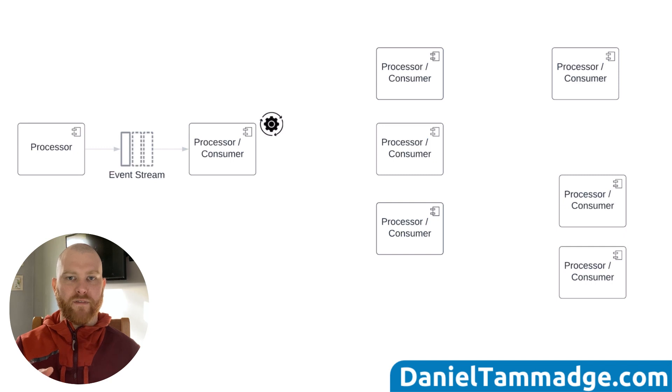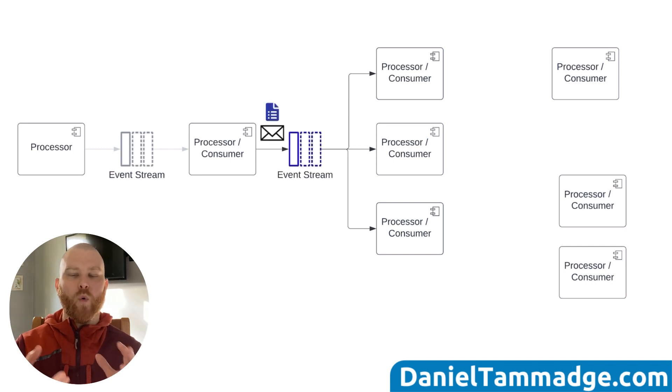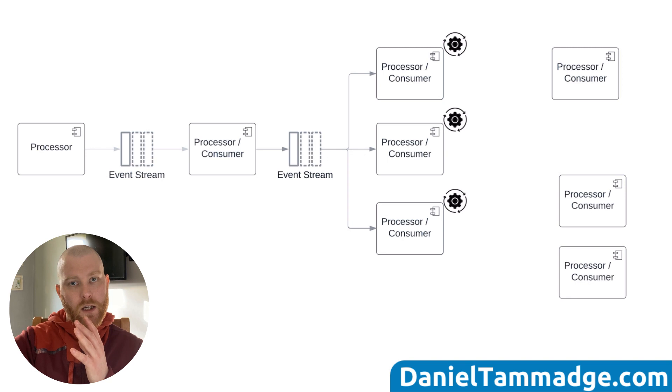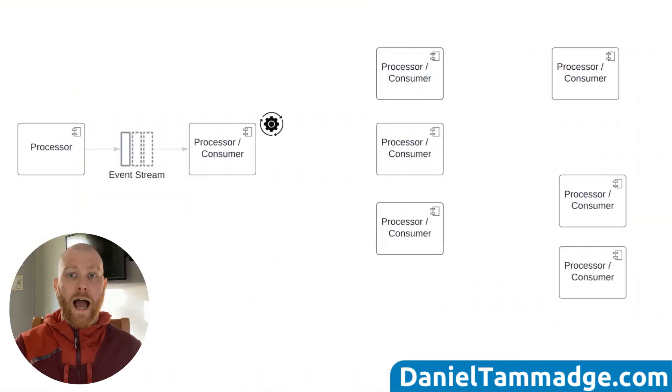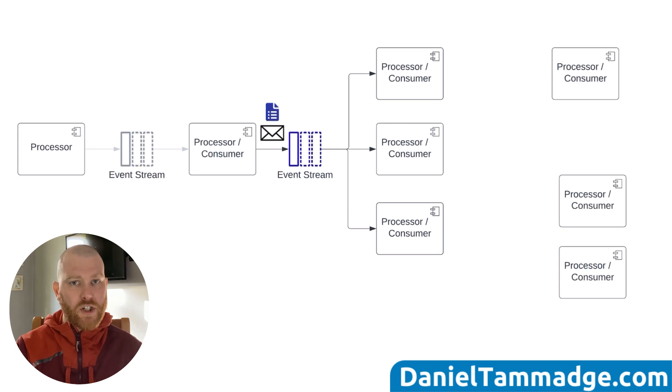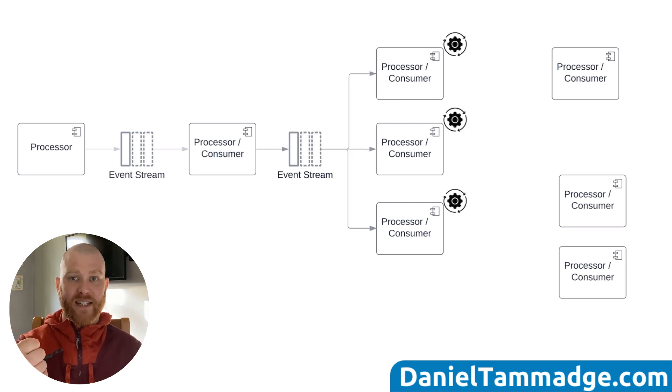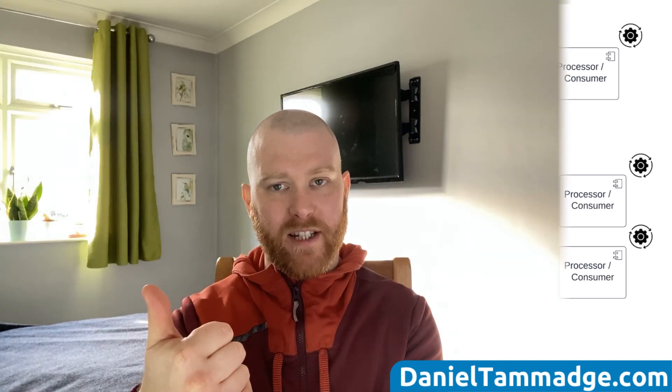The second pattern, event carried state transfer, is a pattern that builds on the event notification pattern by replicating all the data that downstream systems may need from the source system to avoid calling back. This approach can help improve performance and availability as downstream systems no longer depend on the source system for state. However, it can also lead to potential consistency issues because an event state could be stale by the time a consumer processes the event data, and due to the nature of latency in distributed systems we have eventual consistency.